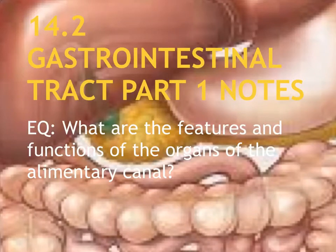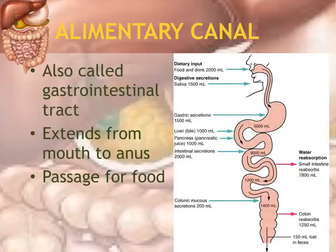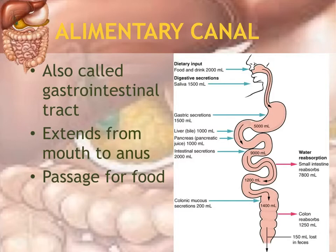This is 14.2 gastrointestinal tract part one notes. The essential question is: what are the features and functions of the organs of the alimentary canal? The digestive tract is also called the alimentary canal or gastrointestinal tract. It extends from the mouth to the anus and is a passageway for food — food must come in contact with and pass through it. It is a series of tube organs connected together.